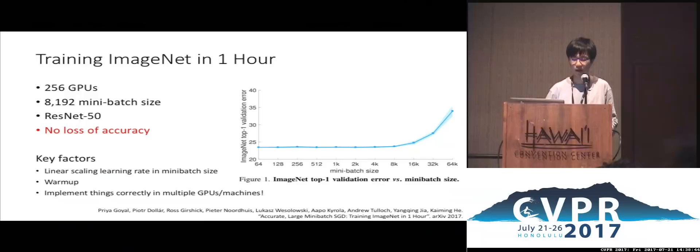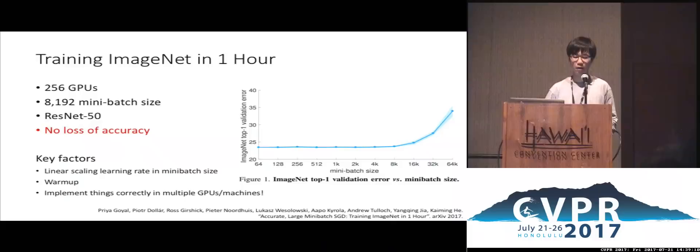The key factors in this algorithm are: first, a linear scaling learning rate in terms of the mini-batch; second, warm-up of learning rates at the beginning of training. Our paper reports theoretical foundations for both factors. In my experience, one of the most important factors is implementing everything correctly in the case of multiple GPUs or multiple machines.